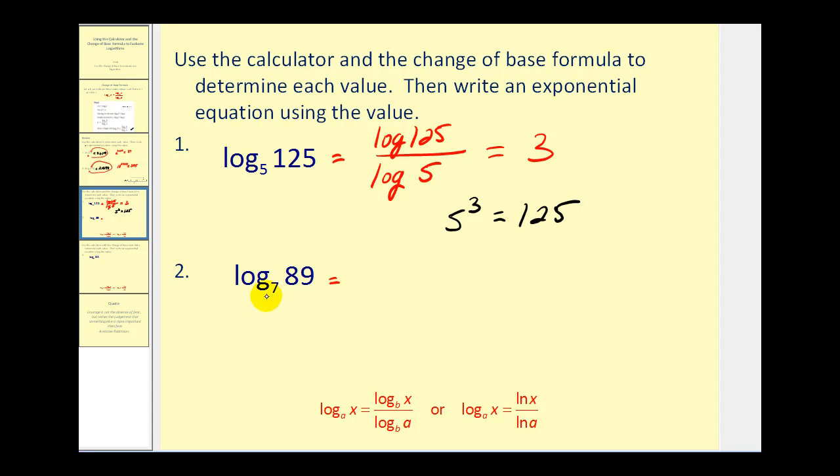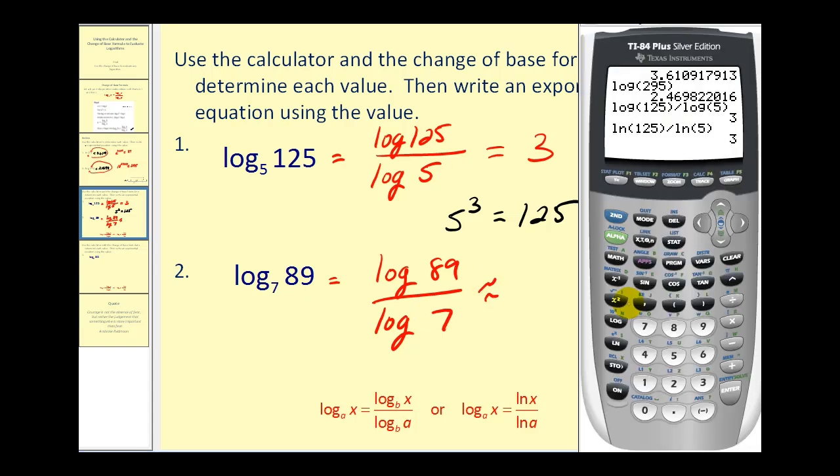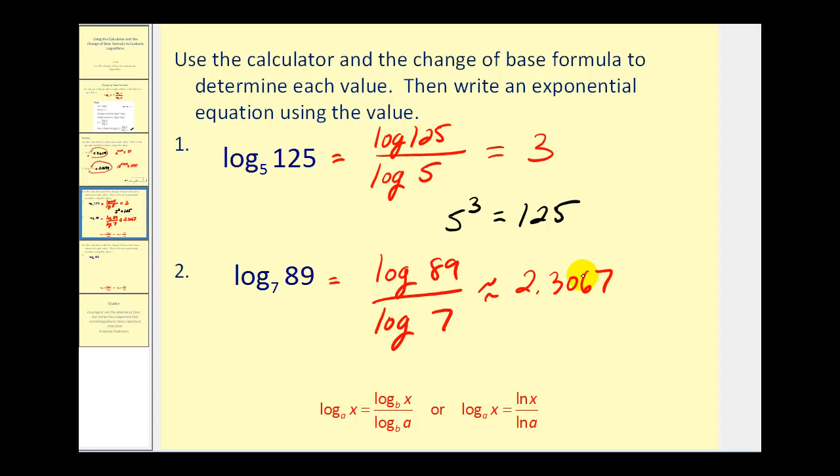Number 2, we have log base 7 which is not on the calculator, but we can take the common log of the number 89 and divide by the common log of the base. And let's go ahead and see what that gives us. So this is approximately 2.3067. So again, what that means is 7 raised to the power of 2.3067 is going to be approximately 89.